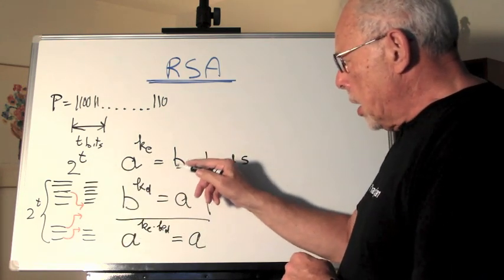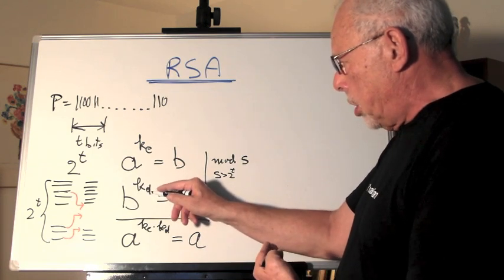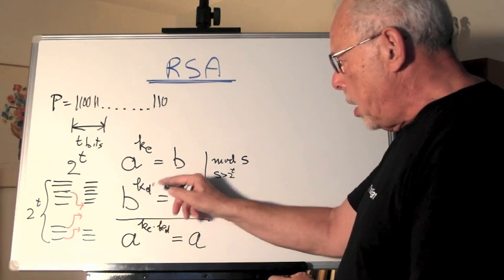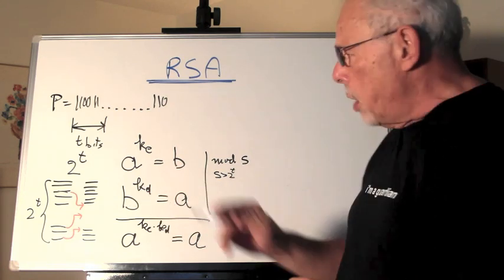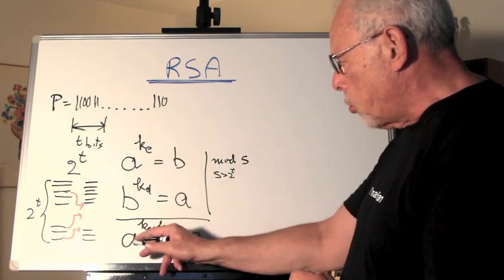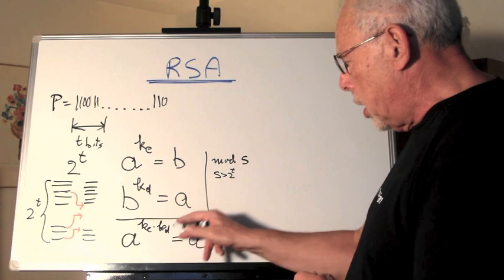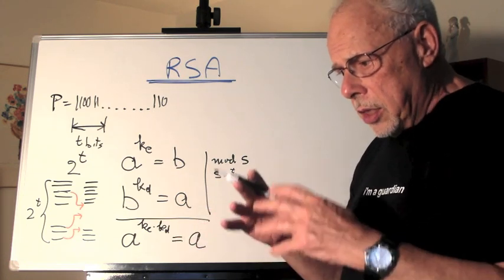Then we will need to find another number, KD, which is the decryption key, to raise B to that power and get back A. And if KE and KD are different, it will work. We can also write it as A to the power of KE times KD equals A.